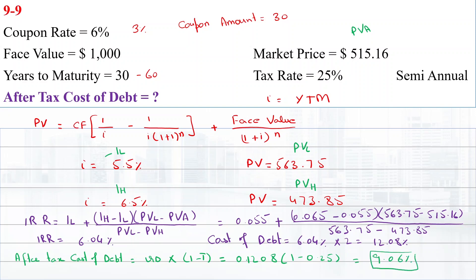So 9.06% is the cost of debt that will be used in the WACC.